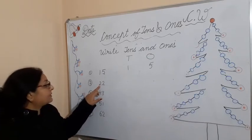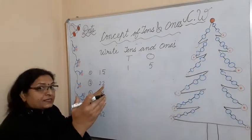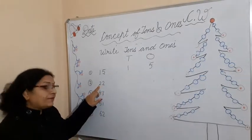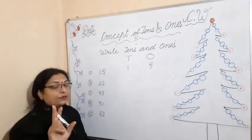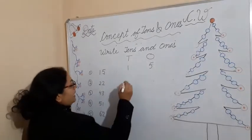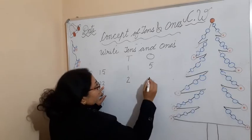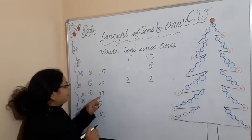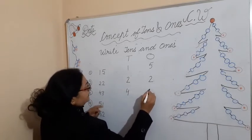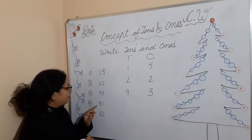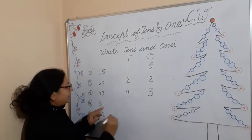Next, how many tens are here? Two. How many ones are here? Two. Because the right side is ones and the left side is tens. Write two under tens and two under ones. Similarly, four tens and three ones — write four under tens and three under ones.